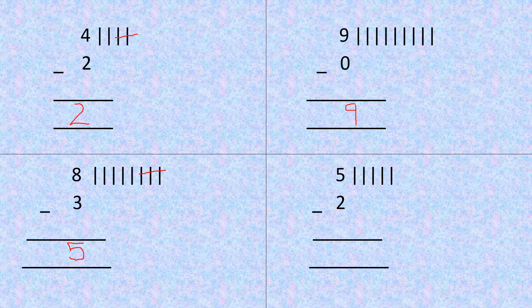Next is five minus two. I have made five lines. Out of five lines, how many lines do I need to cut? Two lines. So let's cut two lines. We are left with how many lines now? One, two, three. We are left with three lines. So my answer will be three — write three over here.